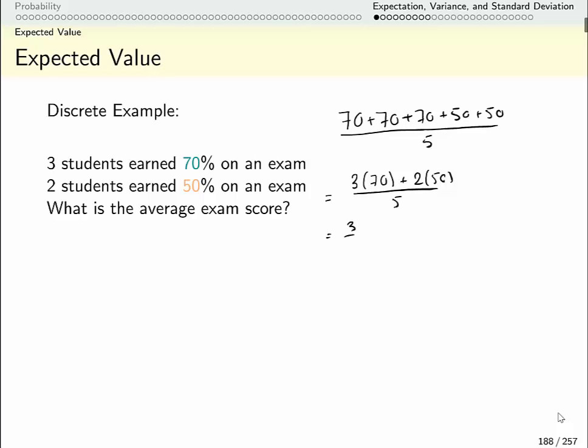Three-fifths of the students got a 70 and two-fifths earned a 50. So it's the same calculation, it's all just an average, but if we do it in the second way in different situations this can be easier to calculate.